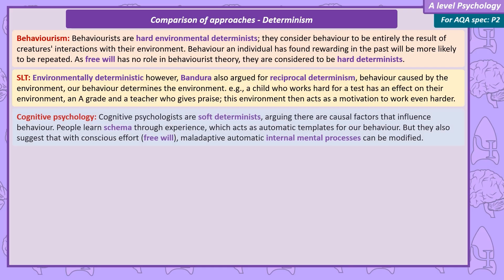Cognitive psychologists are soft determinists. They agree that there are a range of causal factors that influence behaviour — for example, people learn schemas through experience and these act as automatic templates for perceiving the world and deciding how to behave. However, cognitive psychologists argue that with conscious effort, maladaptive internal mental processes can be modified. This cognitive restructuring is a key principle of cognitive behavioural therapy.